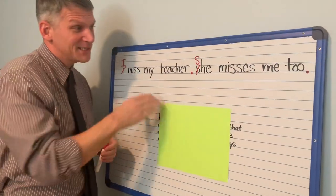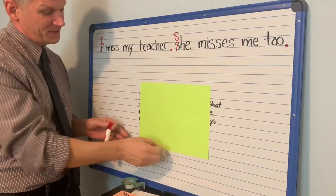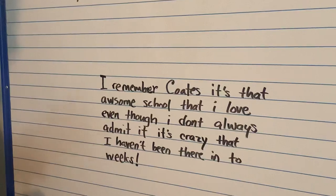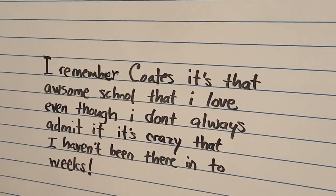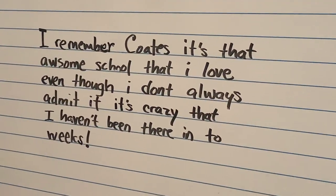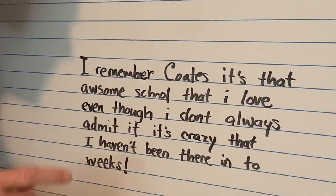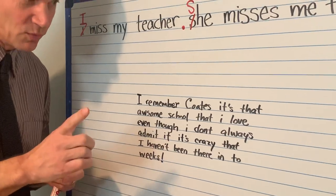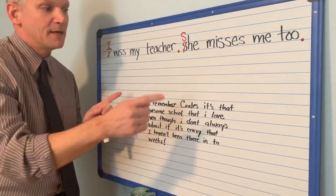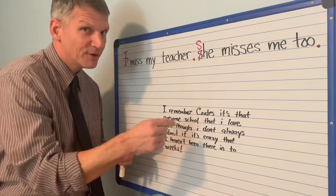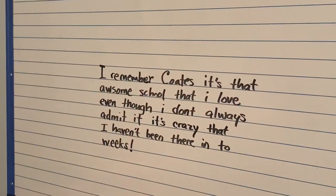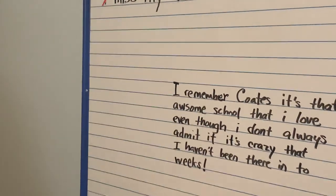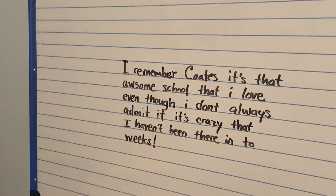Now for you older kids, I hope that was easy and you got them all, because that was a tune-up to do something a bit more difficult. Zoom in on this piece of writing — this is for the older kids, but if you're younger, maybe you'll catch some of these. It says, 'I remember Coates. It's that awesome school that I love, even though I don't always admit it. It's crazy that I haven't been there in two weeks.' There are definitely some mistakes in there — capitalization mistakes, punctuation mistakes, and at least one spelling mistake. I'm going to give you a couple seconds. You don't need to write the sentence, but see if you can catch some of those mistakes. If you're watching with your parents, tell them the mistake.